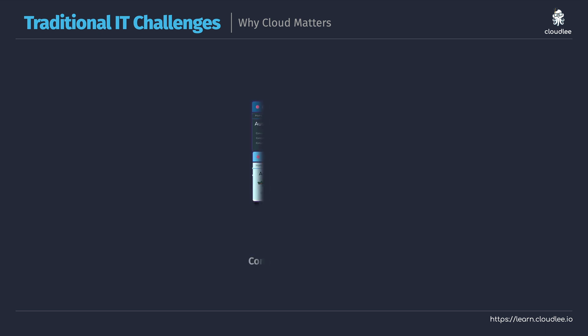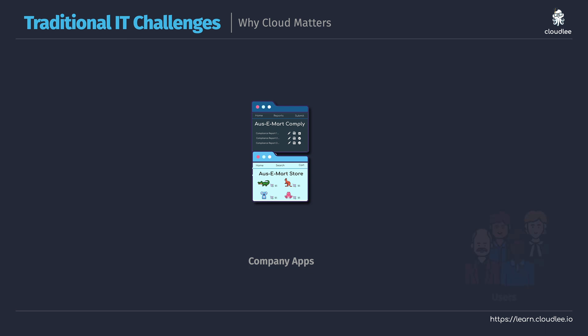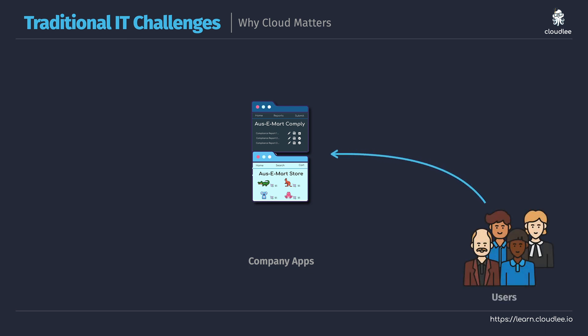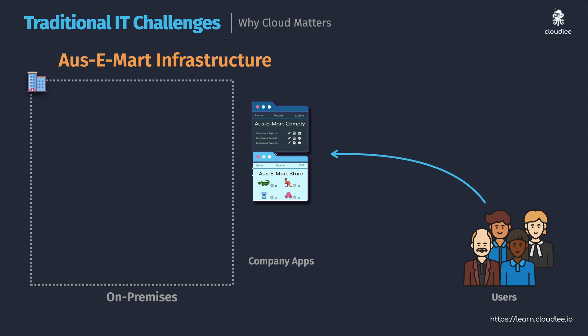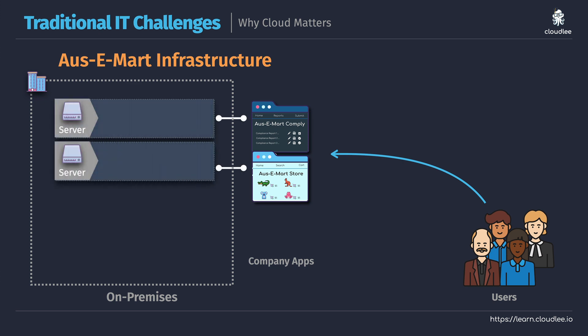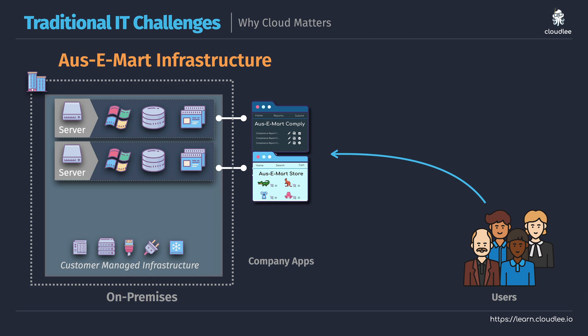OzzyMart is a fictitious company that works across the globe selling a range of different Australia-related paraphernalia — maybe stuffed toys like kangaroos, koalas and that sort of thing. They've currently got several different applications that they provide access to for their users, and currently the OzzyMart team do not use the cloud. OzzyMart have a couple of servers, one for each of their applications, which the IT team have set up with Windows, applications, and all the data needed.